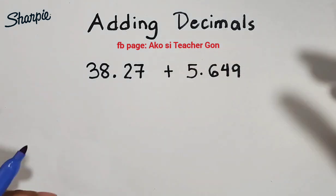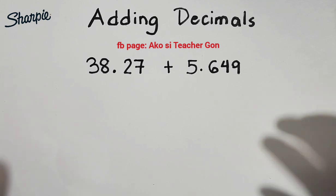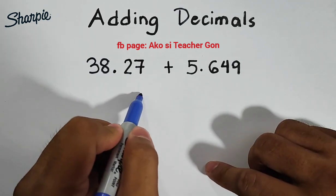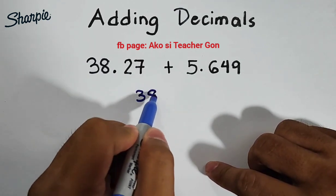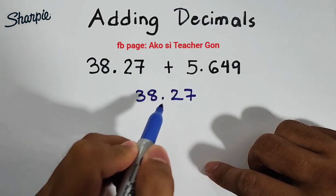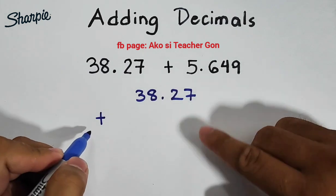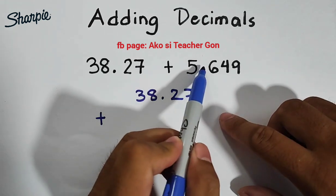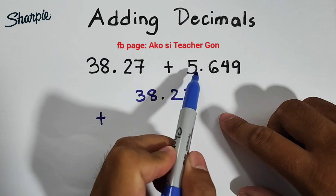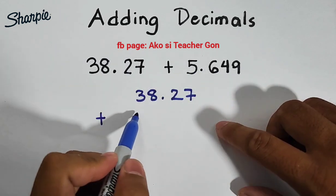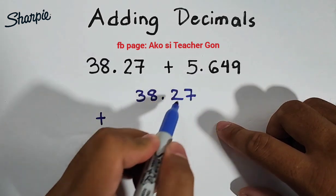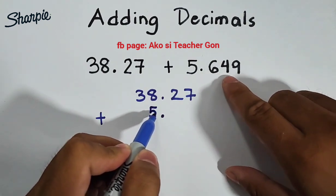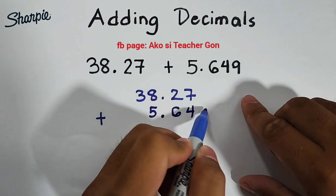So in this video we will add these decimals in vertical form. First we will copy 38.27, so we have 38.27 plus, you will copy your second decimal in which we will align their decimal points. So if this is 5.649 we will not start here. In case we will put here your decimal point, copy your 5 and copy your 6, 4, and 9.